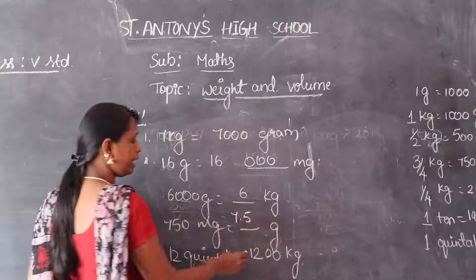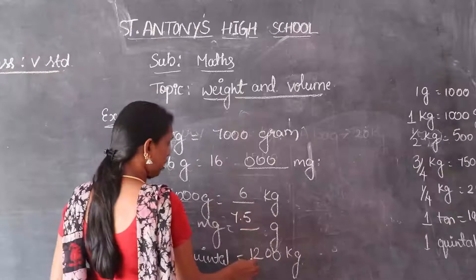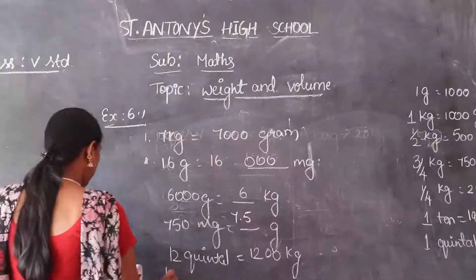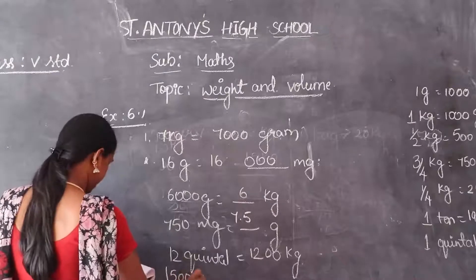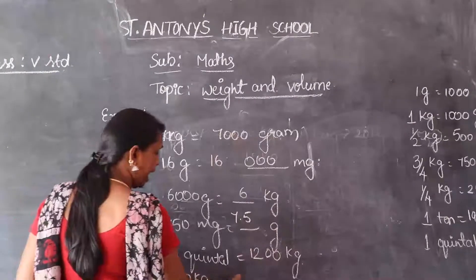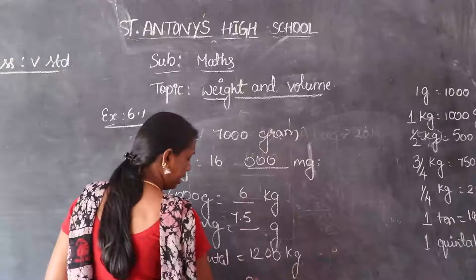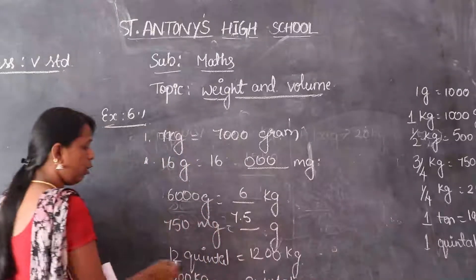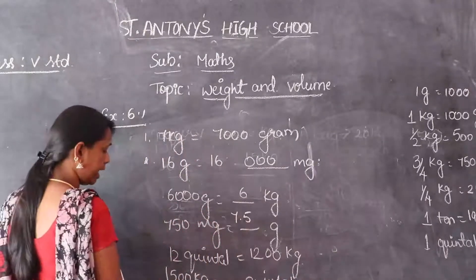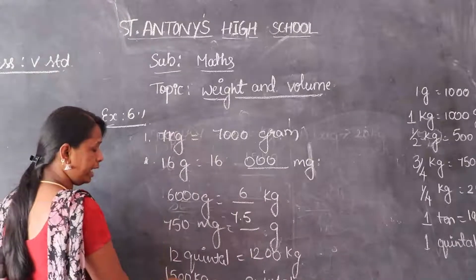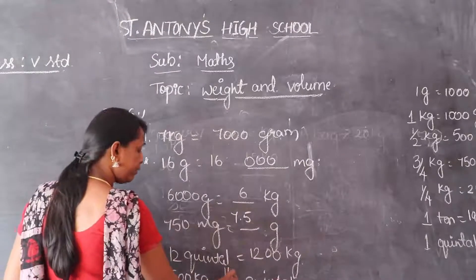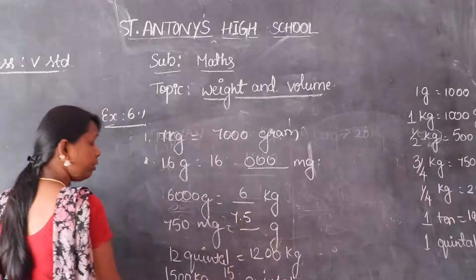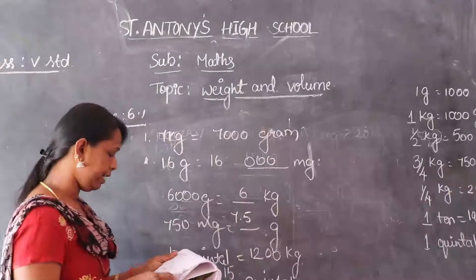750 milligrams is equal to 0.75 grams. And then 12 quintal is equal to 1200 kg — we know that 1 quintal is equal to 100 kg, so 12 into 100 gives 1200 kg. And 1500 kg is equal to 15 quintal, because 15 into 100 gives 1500 kg.